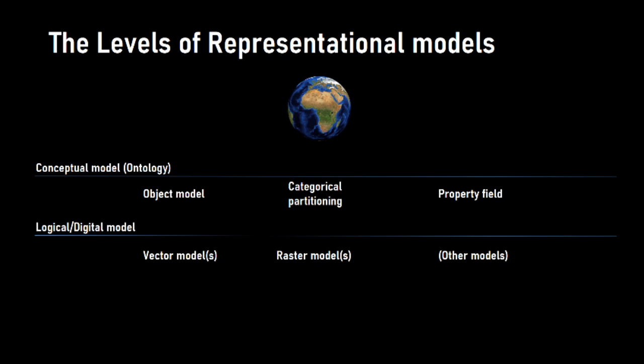At the digital model level, we come from the analog world and go into digital representation — how can these data be represented on a computer? We need to make them discrete. We can't have all numbers or all coordinates. So we have vector models and raster models, which is a new concept here, plus other models outside the scope of this course.